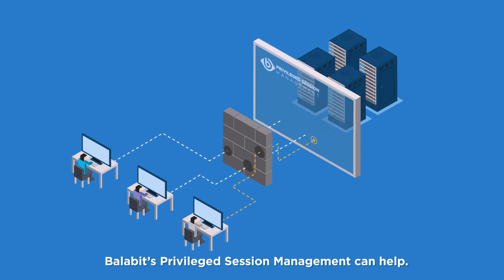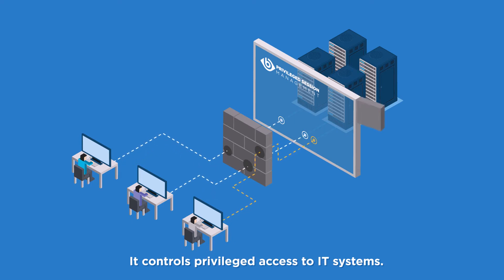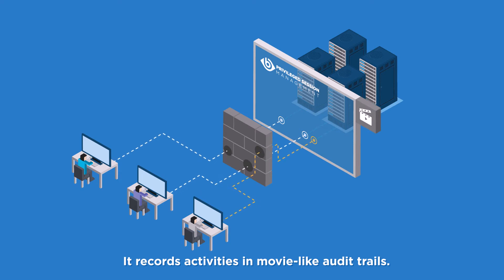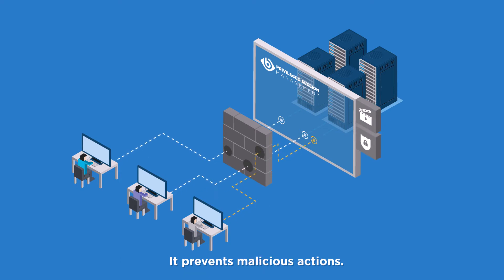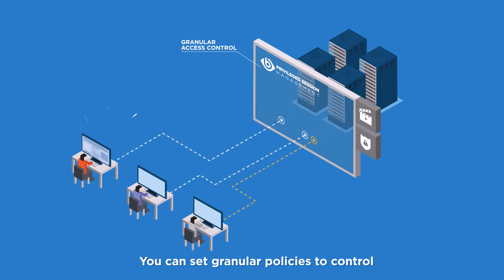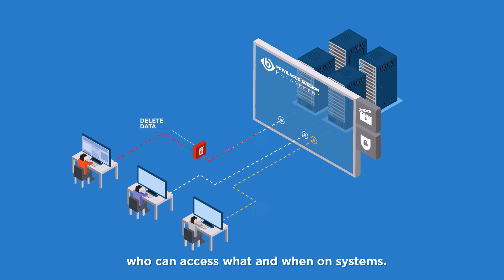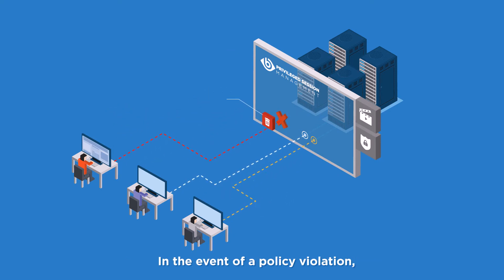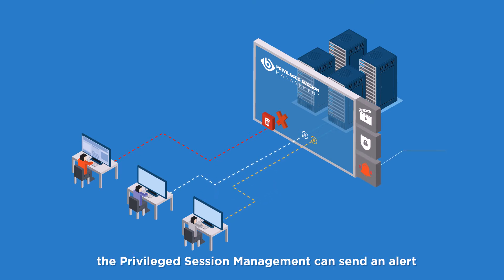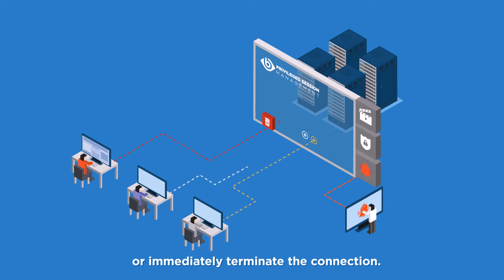Balabit's Privileged Session Management can help. It controls privileged access to IT systems. It records activities in movie-like audit trails and prevents malicious actions. You can set granular policies to control who can access what and when on systems. In the event of a policy violation, the Privileged Session Management can send an alert or immediately terminate the connection.